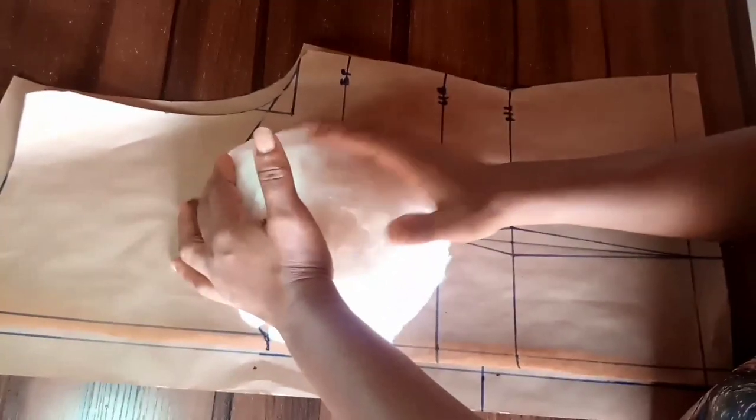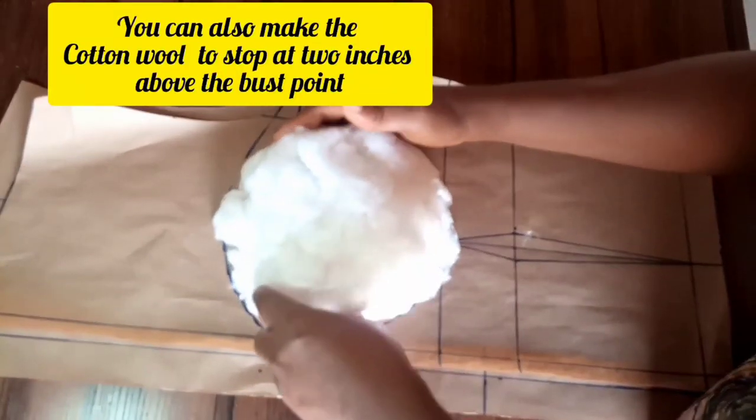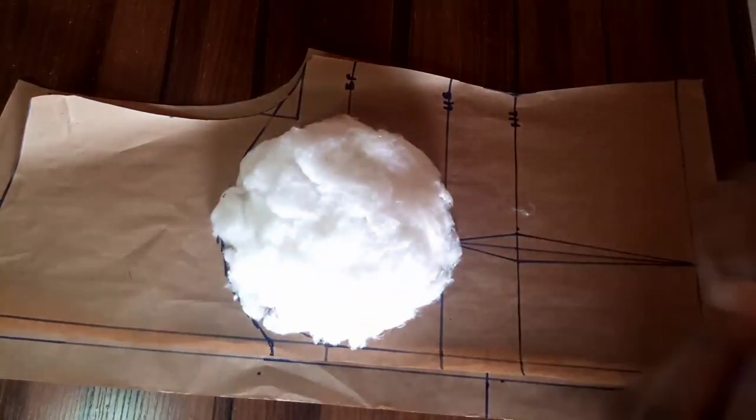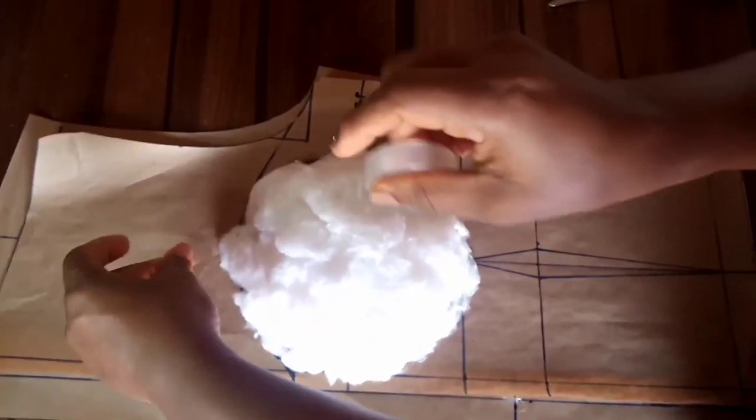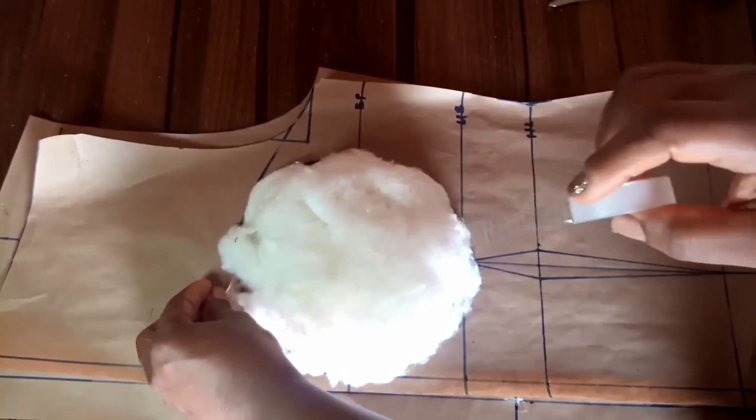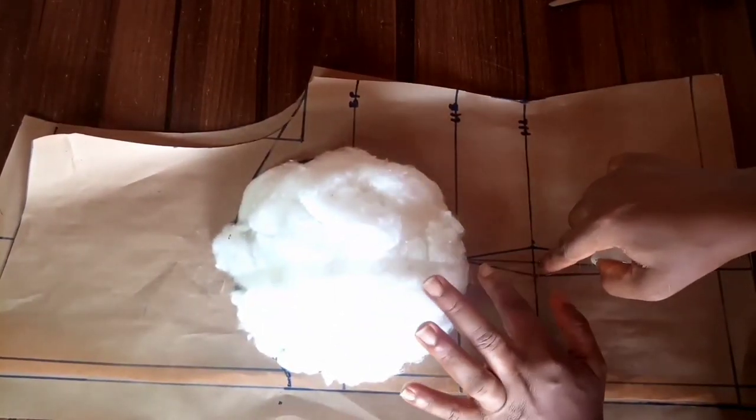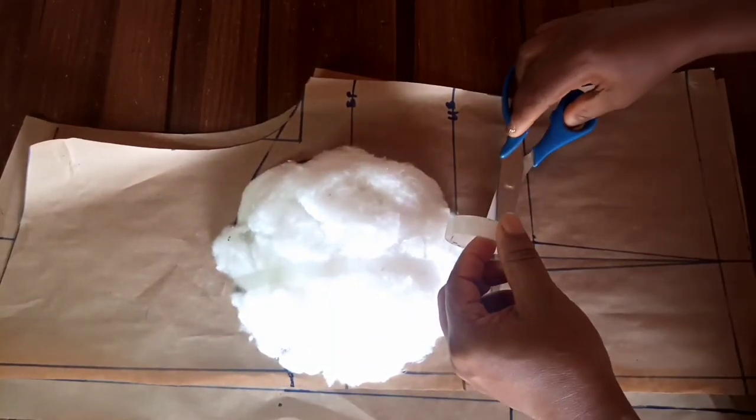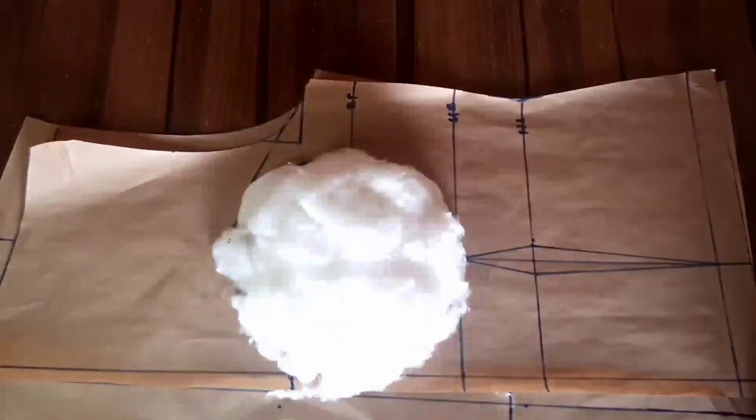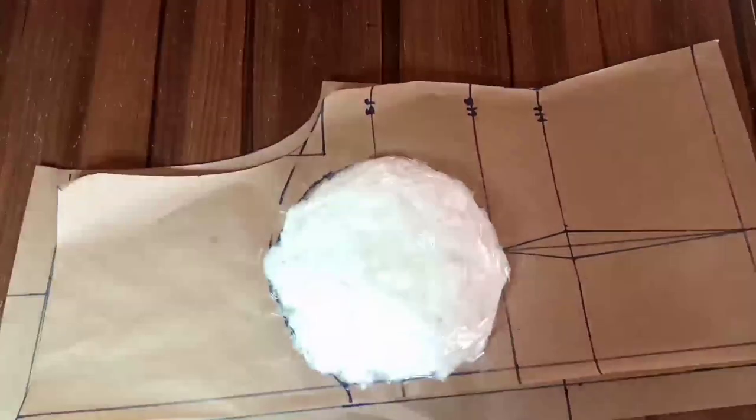Okay, so we have our cotton wool all fixed within the bra cup. So the next thing we have to do is to bring your cellotape. And then you place it all the way, all the way from the top to the underbust.